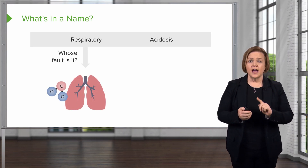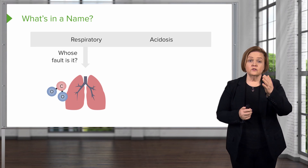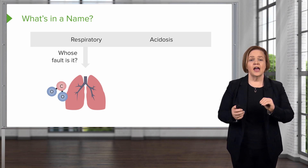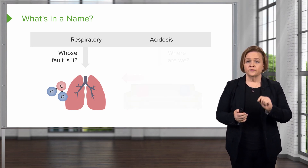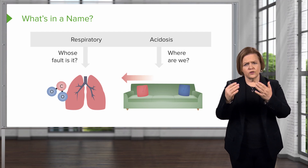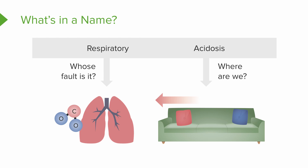Let's look at respiratory acidosis. The name tells us whose fault it is. Because we're in respiratory acidosis, we know it's the lungs' fault. Acidosis tells me where we are. If we're saying that their pH is acidotic, that means it's not between 7.35 and 7.45 — it's somewhere beyond, off that couch. It's lower than 7.35. So if a patient is in respiratory acidosis, that means it's the lungs' fault, and the pH is less than 7.35.